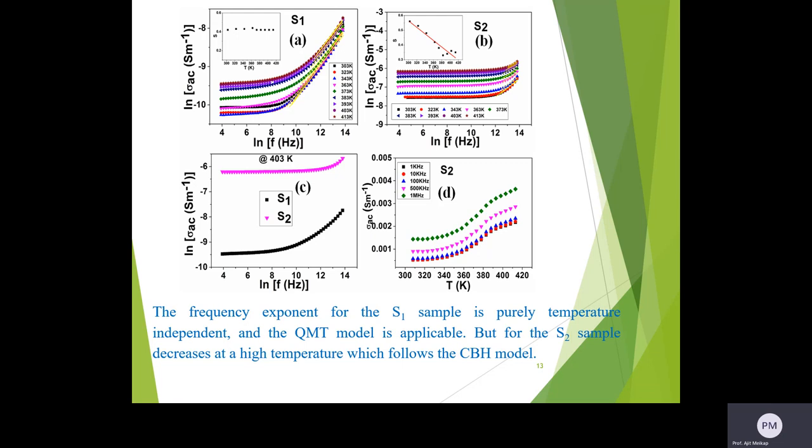The frequency variation of AC conductivity with temperature has been shown here. The frequency exponent S can be calculated from the slope at the straight-line part of the curve. The frequency exponent for S1 sample is only temperature independent and follows the quantum mechanical tunneling model.